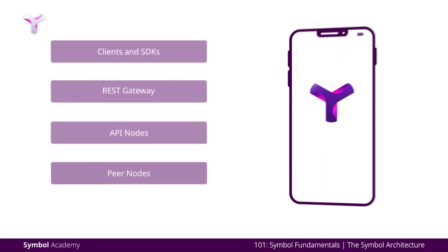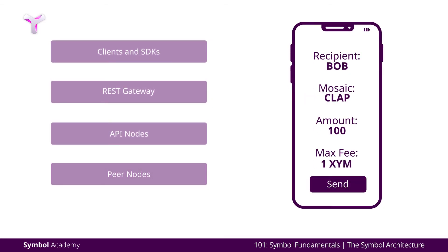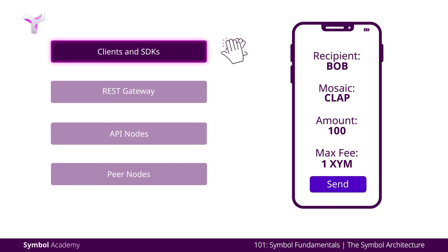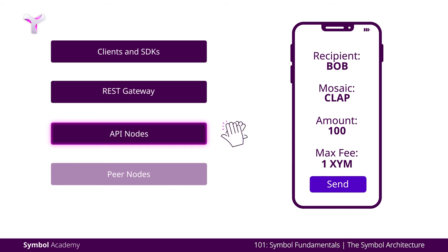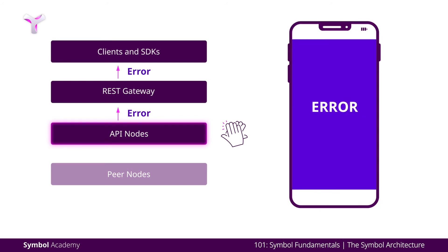Referring back to the example introduced earlier, after Alice presses the Send button, the transaction data is compiled and announced to the REST gateway. A notification will be returned immediately, but at this point it would remain unknown whether the transaction is valid. The first stage of validation happens in the API nodes. If the transaction proves to have an error, it's communicated to the REST nodes where the WebSocket will send a notification through the status channel and be displayed by the wallet app.